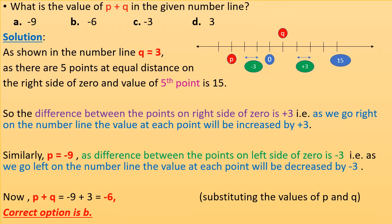The difference between the points on the right side of zero is plus 3 — as we go right on the number line, the value at each point increases by 3. Similarly, p equals minus 9, as the difference between points on the left side is minus 3 — going left, each point decreases by 3. So p plus q equals minus 9 plus 3 equals minus 6. The correct option is B.